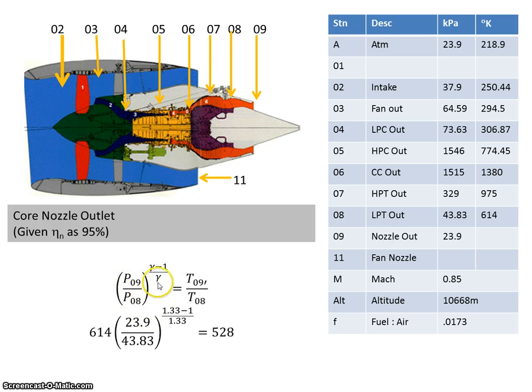Going back to this equation, I have P9 and I have P8, and I have T8. I want to calculate T9, so I just cross multiply by T8. So T8 is 614, and multiply by these values, which gives me 528. That's the ideal value of T9.